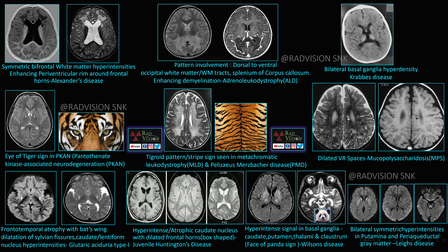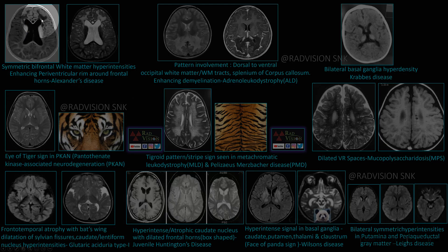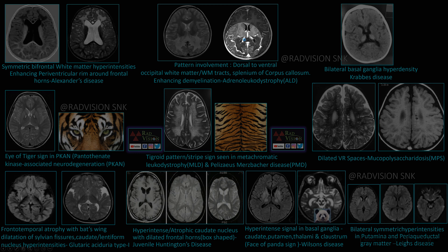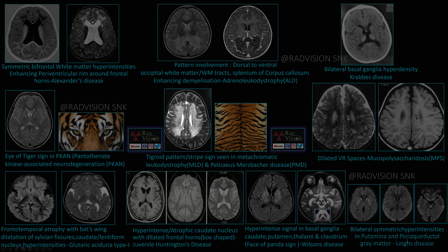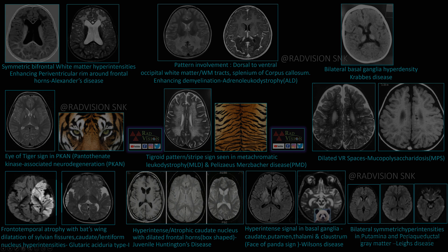Next, one slide summarizing white matter disorders common in neurometabolic conditions in the pediatric age group. Diffuse symmetrical bifrontal white matter hyperintensities which may show enhancement — classical for Alexander disease. Diffuse white matter hyperintensities in the peritrigonal lobes involving the splenium of corpus callosum with enhancement — classical for ALD (adrenoleukodystrophy). Bilateral basal ganglia hyperdensity — classical for Krabbe disease. Eye of tiger appearance in globus pallidus — classical for pantothenate kinase-associated neurodegeneration (PKAN). Tigroid or stripe pattern seen in MLD or Pelizaeus-Merzbacher disease — this tigroid pattern is spared perivascular white matter in the background of demyelinating white matter. Dilated VR spaces in mucopolysaccharidosis. Frontotemporal lobe atrophy with deep sulcal features mimicking batwing appearance — classical for Glutaric aciduria.